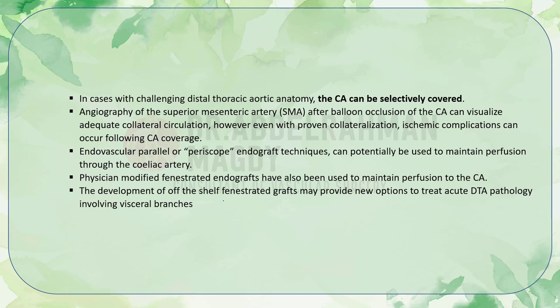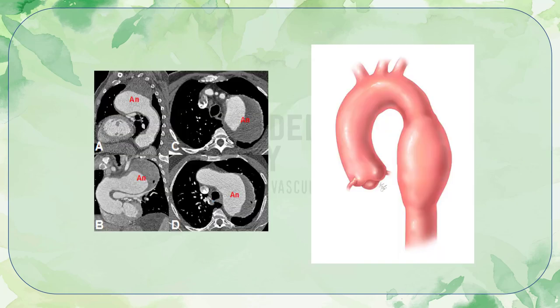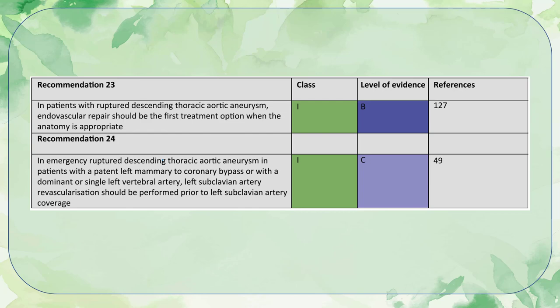The development of official fenestrated grafts may provide new options to treat acute descending thoracic aortic pathology involving the visceral branches. The diagram shows the thoracic aorta with axial cuts demonstrating a large aneurysm just distal to the left subclavian artery. Recommendations: in patients with ruptured descending thoracic aortic aneurysm, endovascular repair should be the first treatment option when the anatomy is appropriate. In emergency ruptured DTAA with a patent left mammary to coronary bypass or a dominant or single left vertebral artery, left subclavian artery revascularization should be performed prior to left subclavian artery coverage.